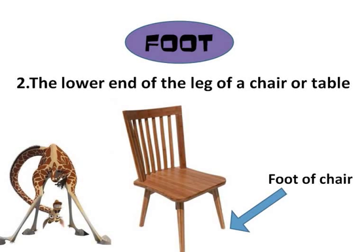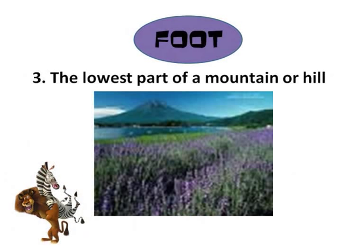Can you think of any other meaning, Alex? Oh yes, you know we like to hang out by the meadows and the lavender at the foot of the mountain or the hill. Do you remember that? And that's right, kids — the lower spot of a mountain or hill is known as the foot of the mountain. Look at the picture — the lavenders are situated at the foot of the mountain. Aren't they beautiful?